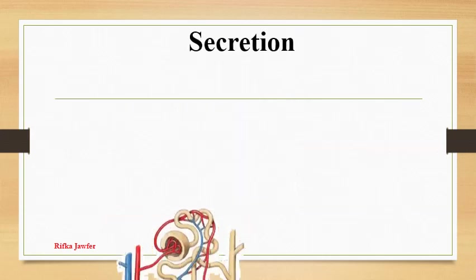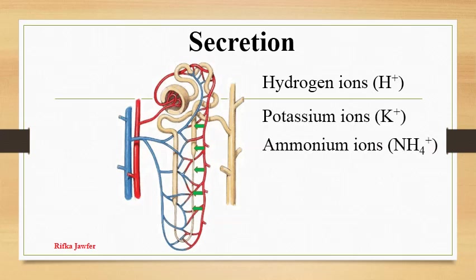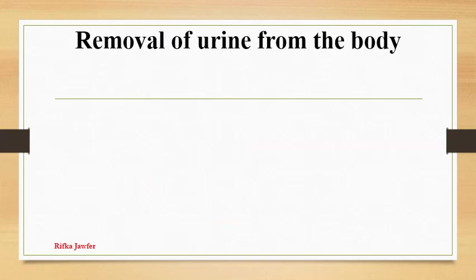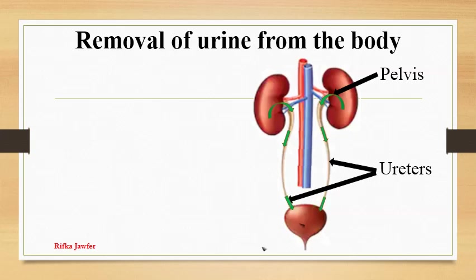Secretion: Some materials in blood enter into the tubules of the nephron. Hydrogen ions, potassium ions, ammonium ions, creatinine, drugs and vitamin B are the materials which are secreted into the nephron. Urine is released to the pelvis, from there it is transported along the ureters and collected in the bladder. It is temporarily stored in the bladder and released from the urethra according to need.